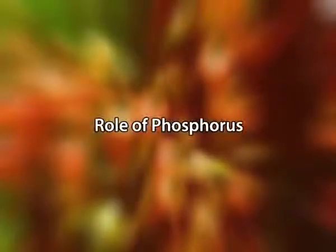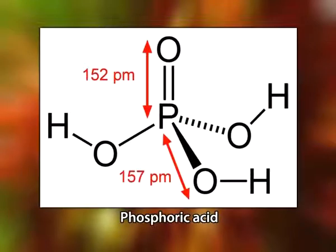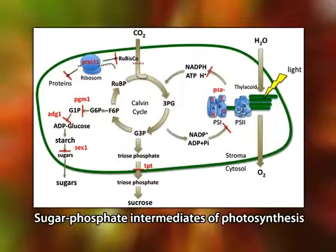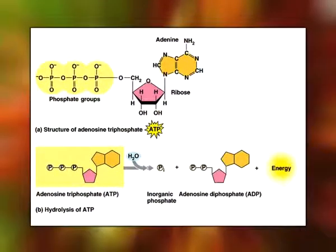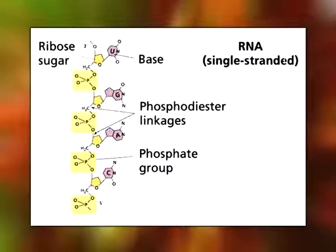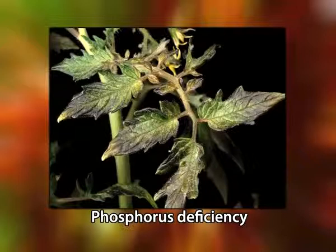Now the role of phosphorus. Phosphorus is available in the soil solution primarily as phosphoric acid. It is an integral component of important plant cell compounds, including sugar phosphate intermediates of respiration and photosynthesis, and the phospholipids that make up plant membranes. It is also a component of nucleotides used in plant energy metabolism such as ATP, and in DNA and RNA. The characteristic symptoms of phosphorus deficiency include stunted growth in young plants and dark green coloration of leaves.